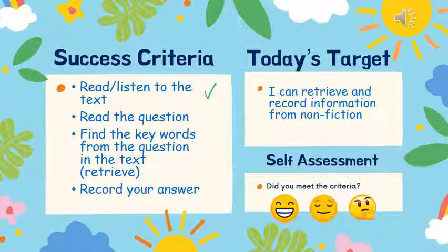Now we're returning to our target. Your target today was: I can retrieve and record information from nonfiction. So, did you read or listen to the text? Did you read the question? Give yourself a tick if you did. Did you find the key words from the question and look for them in the text — that's the retrieval part? And did you record your answer — did you write it down? If you've ticked all of them you've got a big smiley face. If you ticked some, you'd be the middle emoji. If you're not sure about the lesson, maybe you need another go. Which one are you? Draw your emoji on your piece of paper.